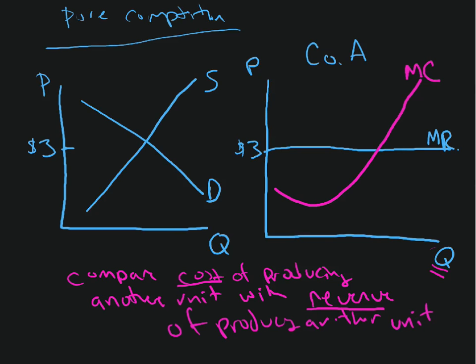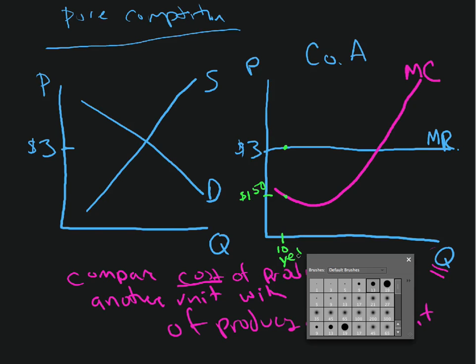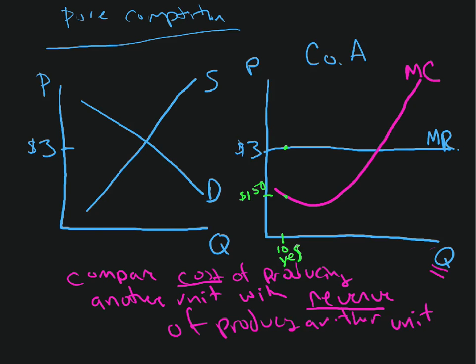This company is going to think. They're going to say to themselves, OK, should I make this maybe 10th unit? And they're going to look over there and say, well, the marginal revenue is $3 if I make the 10th unit. But the marginal cost is down here somewhere, like about $1.50. So will they make this 10th unit? I think the answer is yes. Why not? Let's make this 10th unit. I'm getting $3 and it's only costing me $1.50.